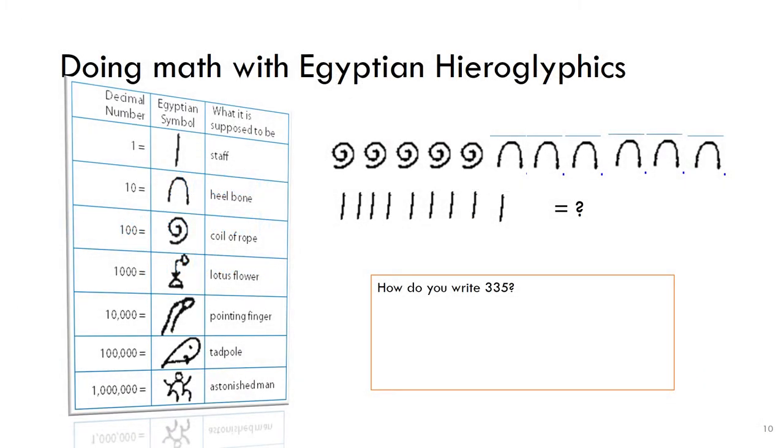Doing math with Egyptian Hieroglyphics. How do you write 335? What is this number?